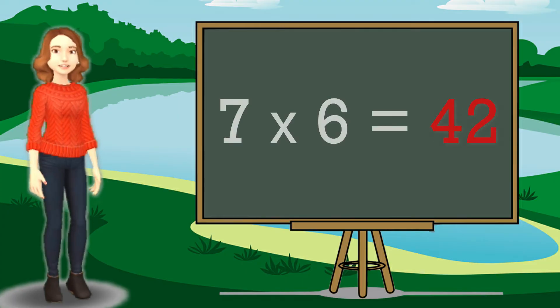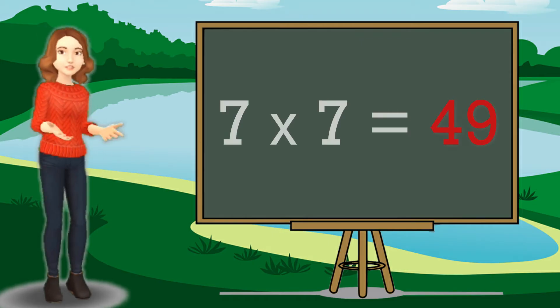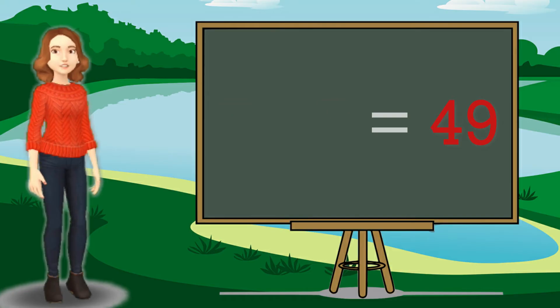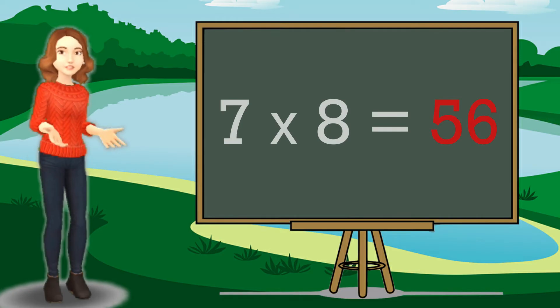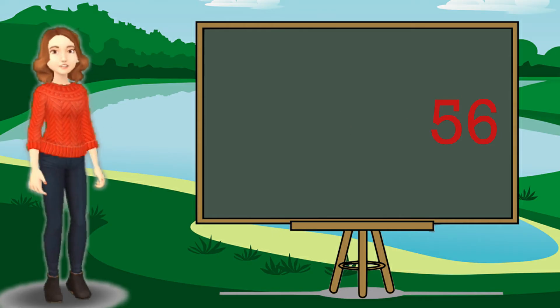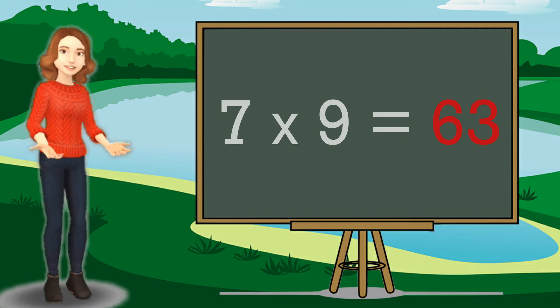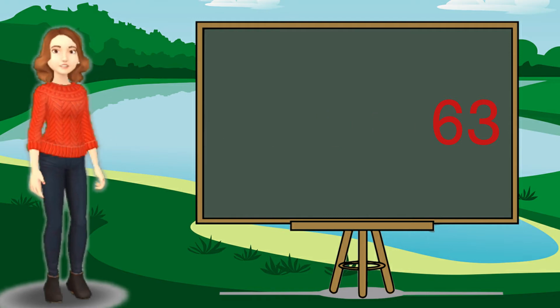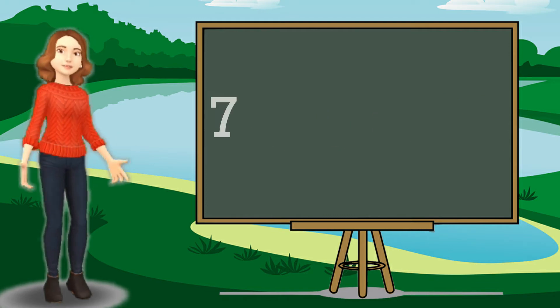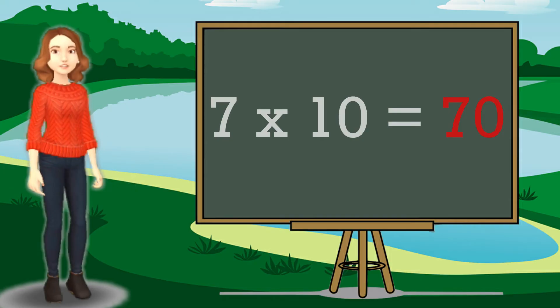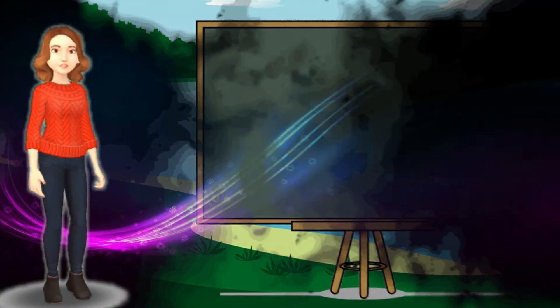7 six are 42. 7 sevens are 49. 7 eights are 56. 7 nines are 63. 7 tens are 73.